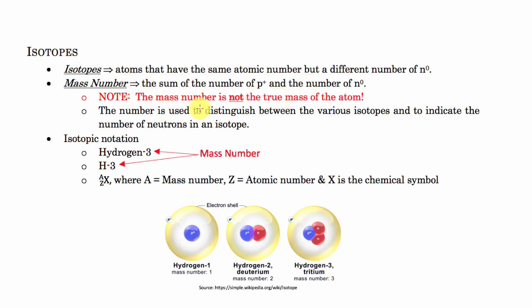Don't get confused because the mass number is not the true mass of the atom — all it is really doing is counting the particles. If you're using the relative mass, then you could say that it's counting them, but remember the actual mass is a little bit different. I'm going to go into more detail on this in a future lesson on average atomic mass, and I'll have a link in the description below for you if you want to take a look at that.